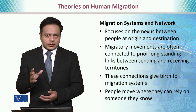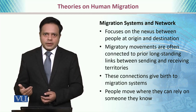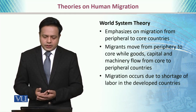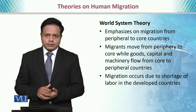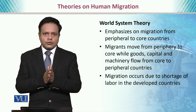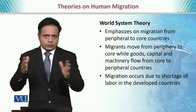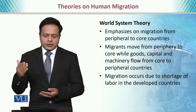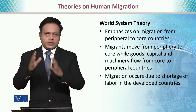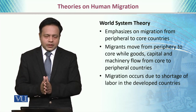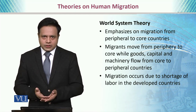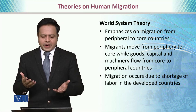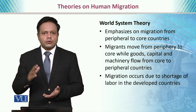People move where they can rely on someone they already know — for example, people migrate to other countries if they are called by people already there, or perhaps they become spouses to go there. Finally, we have the world system theory, which emphasizes migration from peripheral to core countries. Peripheral countries are economically dependent and less stable, while core countries are economically developed and modernized. Migrants move from periphery to core while goods, capital, and machinery flow from core to peripheral countries. These core countries attract more migrants due to greater economic opportunities and also due to the shortage of labor in those developed countries.